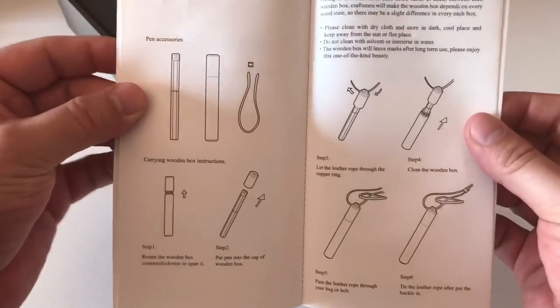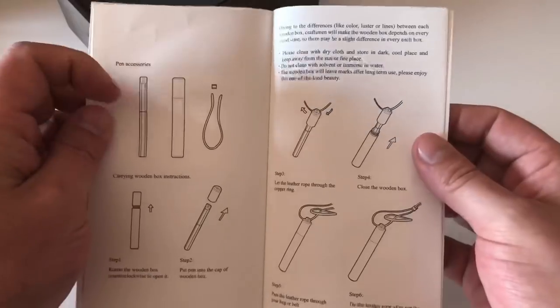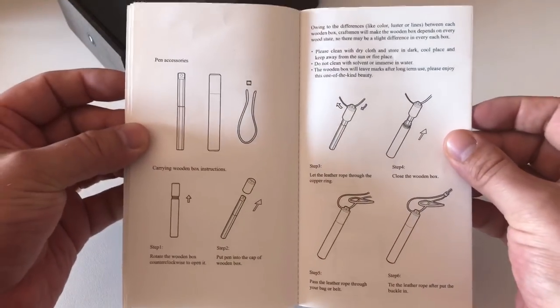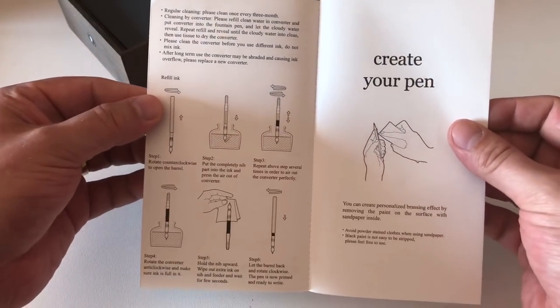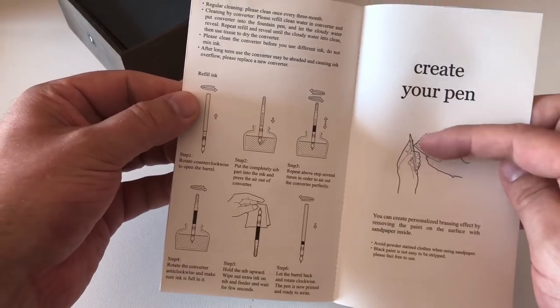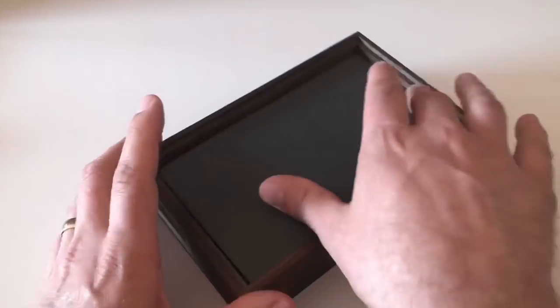You get a nice pen box and leather straps with it. This is how you apply the leather straps to the pen. This is how you fill and clean the pen, and this is how you can sand the black parts of the pen.